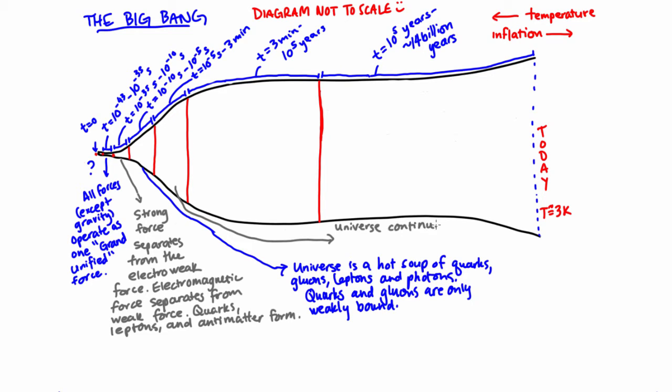From 10 to the minus 5 seconds to 3 minutes, as the universe continued to cool, quarks and gluons began to form hadrons. Matter and antimatter began to annihilate, leaving a slight excess of matter in its wake. This excess of matter is what forms our universe.